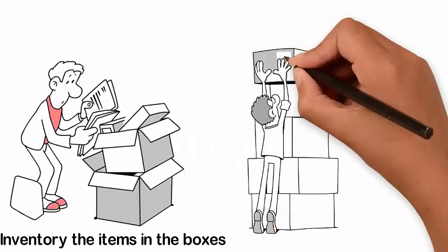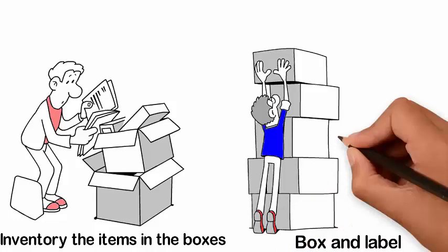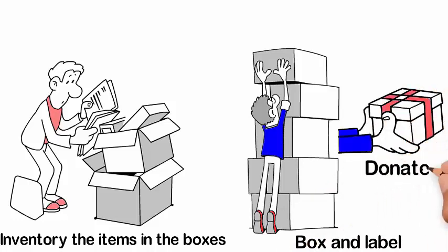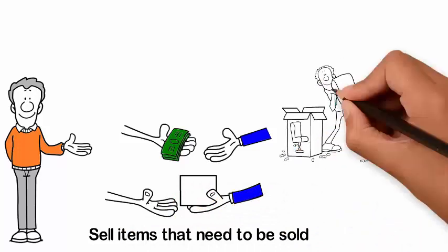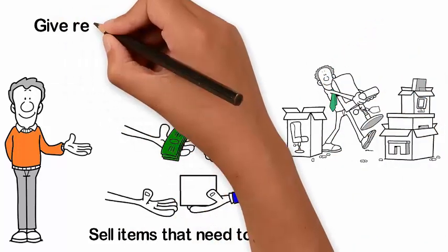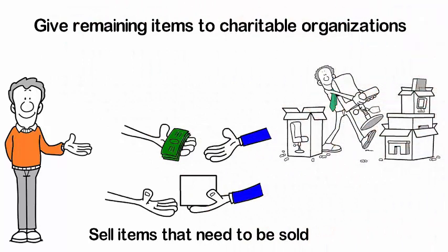Sort the items you want to give to others. Box and label them. Give away items you want to donate. Sell items that need to be sold. Auction or sell furniture and other items. Give remaining items to charitable organizations. Discard unneeded items.